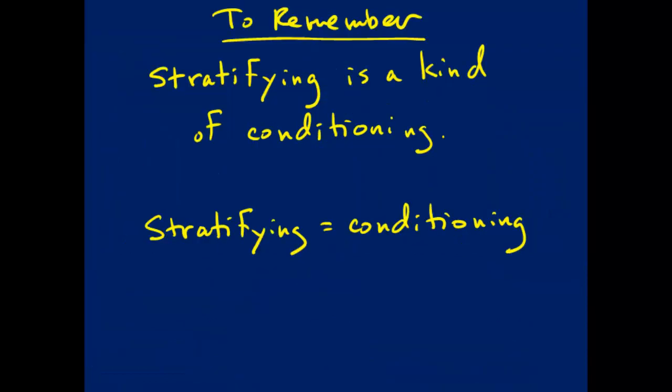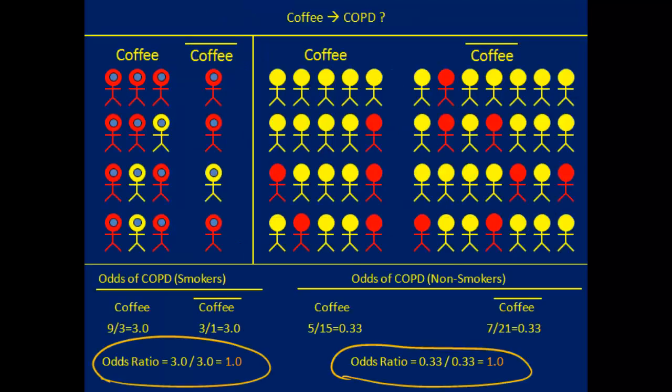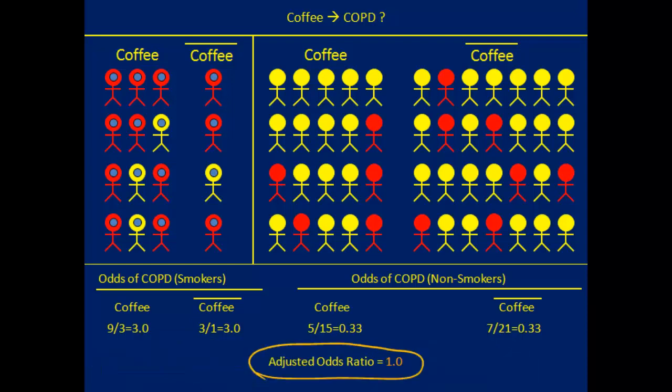The main point to remember is that stratifying is actually a kind of conditioning. When you stratify an analysis, you are conditioning the analysis on the variable that you are using to stratify on. If the associations between exposure and outcome are similar or the same within levels of the stratifying variable, then we can combine them into an adjusted association between exposure and disease.